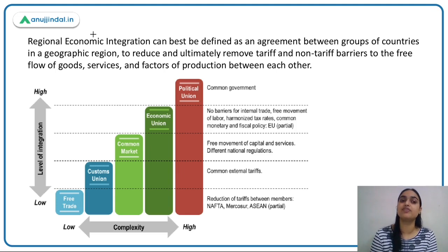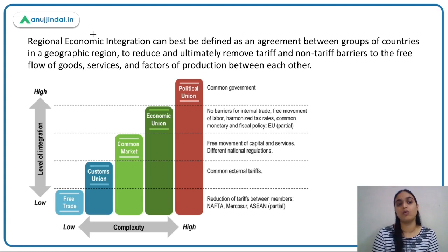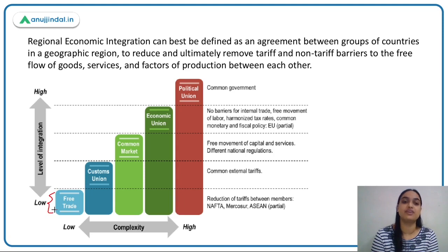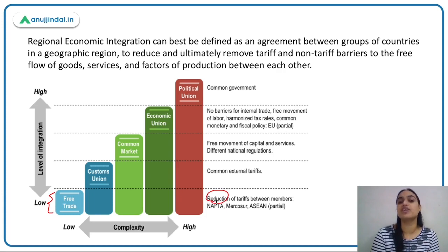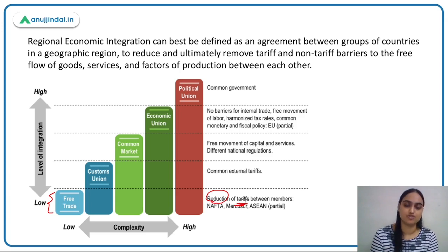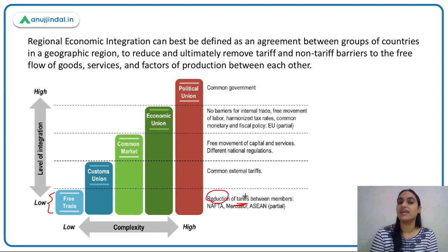There are different levels of economic integration — a country can be least or most integrated with others. The most basic level is a free trade agreement, or free trade area. Countries belonging to this area reduce the tariff barriers imposed among themselves, which improves trade and relations. NAFTA is one example. SAARC also has its free trade agreement called SAFTA, which I'll discuss shortly.